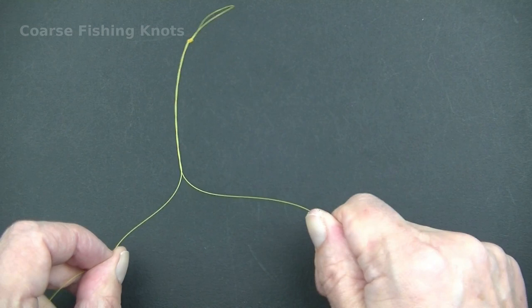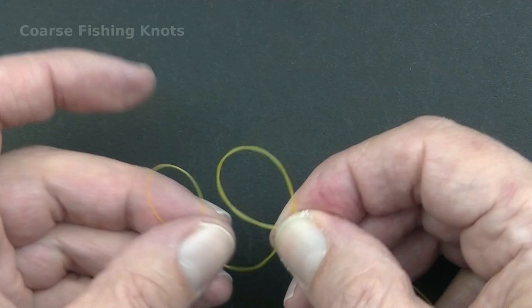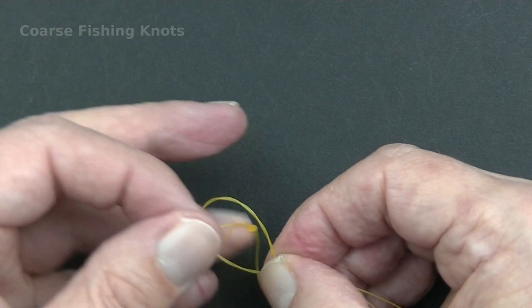Create a two or three inch twizzled boom from the long tag end of the loop and the main line. Tie off with a double overhand knot.